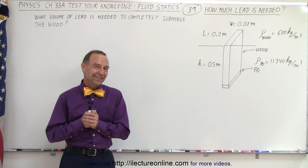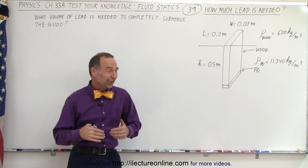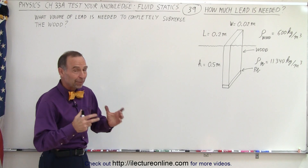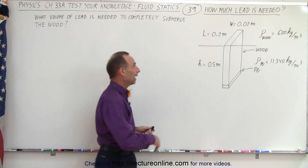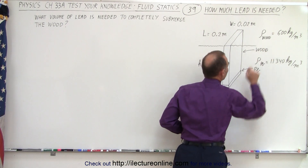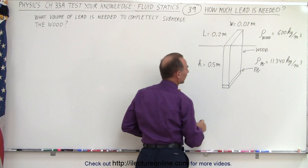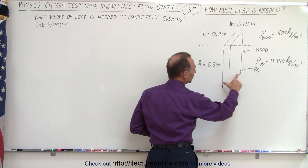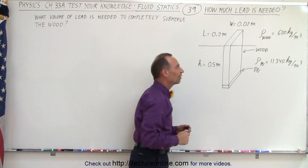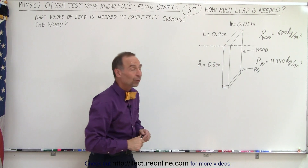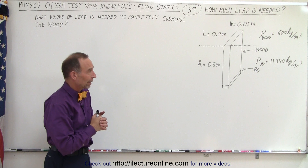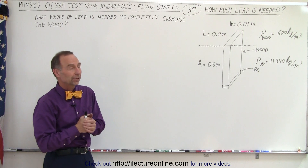Welcome to our lecture online. Here's another interesting problem where we have a piece of wood that has a density of 600 kilograms per cubic meter, and at the bottom we attach a piece of lead that has a density of 11,340 kilograms per cubic meter.